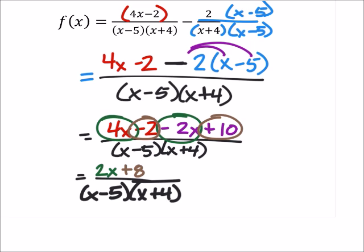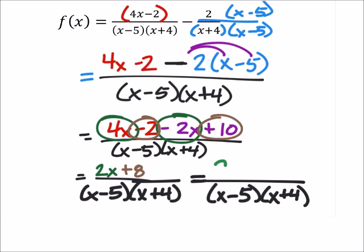Now the last thing we should do on this is just look at that numerator and see if we can factor anything out from both of those terms, the 2x and the 8. Since they're both even, we know we can factor out at least a 2. So again, this is not going to affect the denominator. Alright, so if I factor out a 2 in the parentheses, I'm left with an x. And then I've got a plus 4.